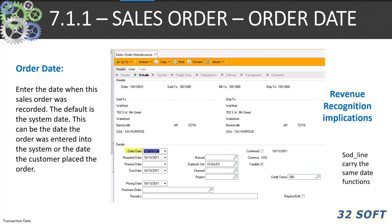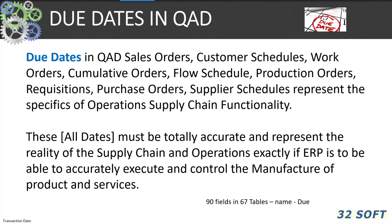In 7.1.1 sales order maintenance, we find the records for date of entry. Sales order lines carry the same date functionality. Due dates in QAD for sales orders, customer schedules, work orders, cumulative orders, flow schedules, production orders, requisitions, POs, and supplier schedules are critical to ERP as they represent the specifics of operations in supply chain functionality. All dates should be totally accurate and represent the reality of supply chain operations exactly for ERP to operate correctly.